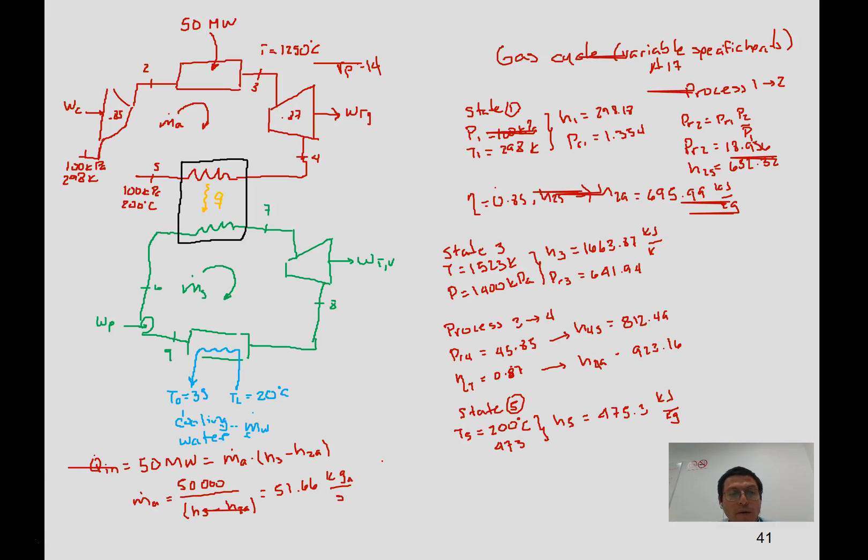Mass flow rate will be 50,000 divided by h3 minus h2a, and this gives us 51.66 kilograms of air per second. We're going to compute the net power of this cycle. The net power will be the mass flow rate times the work of the turbine minus the work of the compressor.